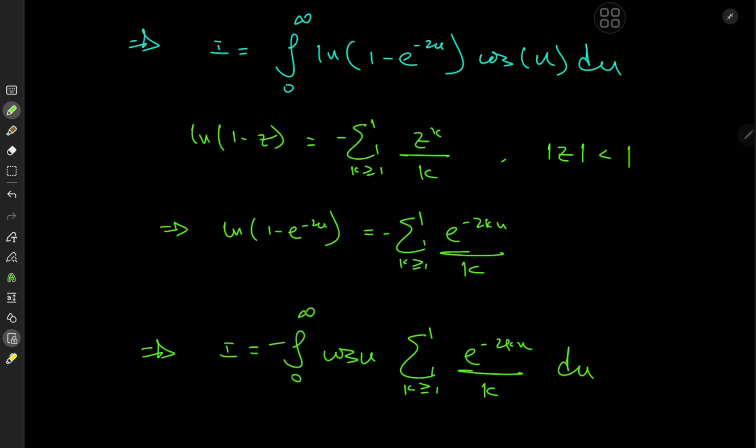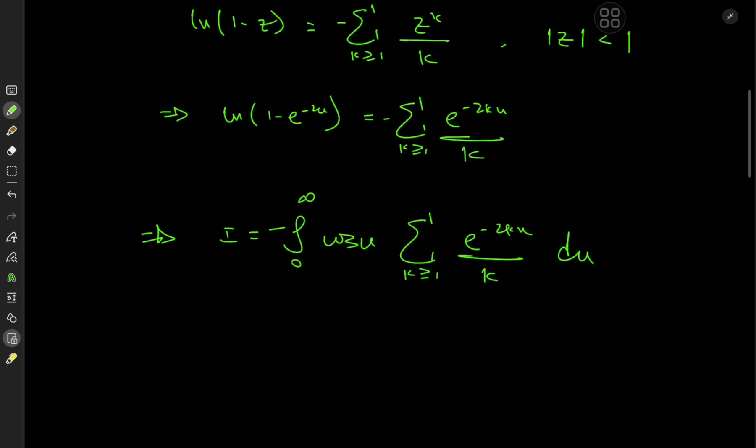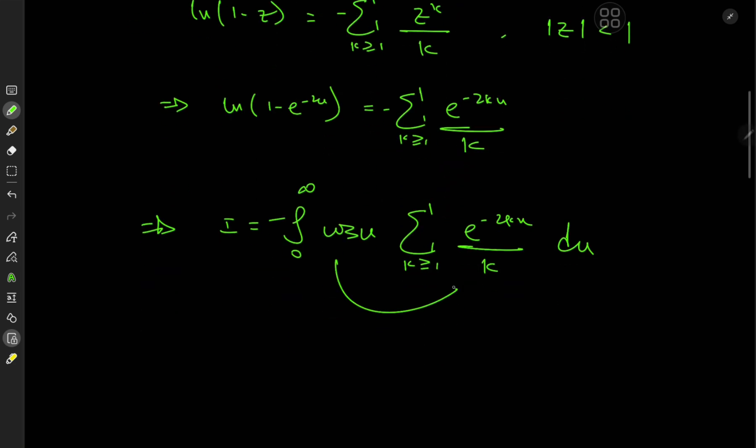And of course, a negative sign that I am inevitably going to forget sometime. And because this cosine term is independent of the index variable k, we can take it inside the summation operator. And we now have the negative of the integral from 0 to infinity, sum over k from 1 to infinity, e^(-2ku) times cosine(u) over k du.